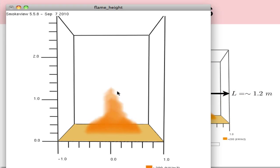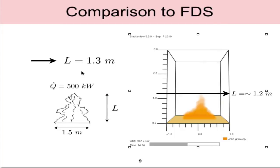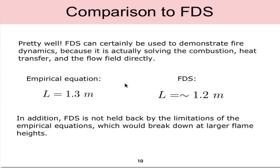From the simulation we can see that the flame height predicted is about 1 to 1.2 meters and how well does that compare to our empirical answer of 1.3 meters? It turns out that it's pretty good, it's pretty close. 1.3 meters, 1.2 meters. In this case FDS can certainly be used to demonstrate fire dynamics because it's actually solving the combustion, heat transfer, and the flow field directly.